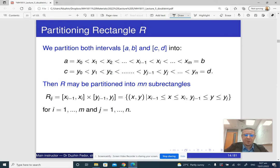Then, by doing this, we essentially partition our rectangle R into m times n subrectangles. And the area of every subrectangle is essentially delta x_i times delta y_j.